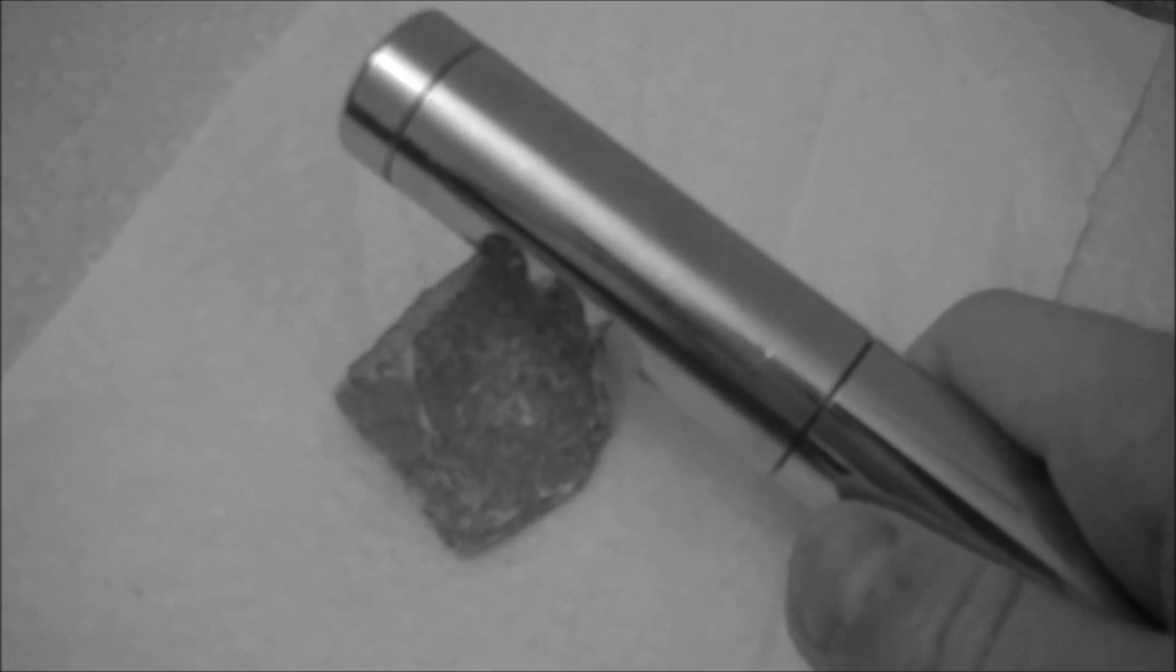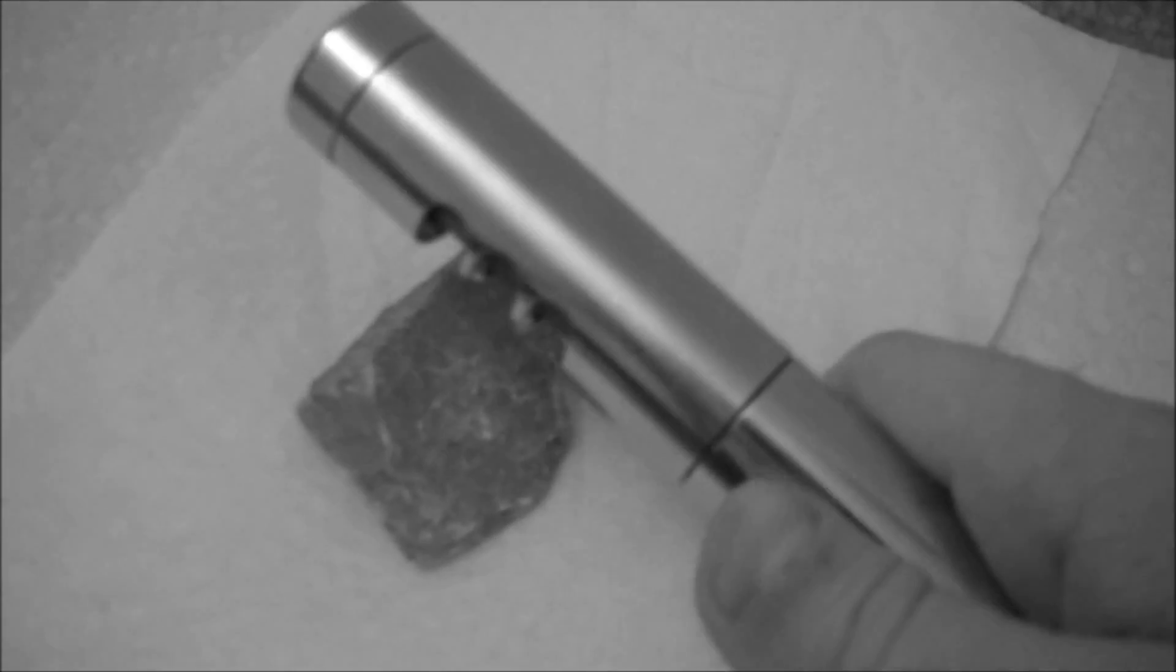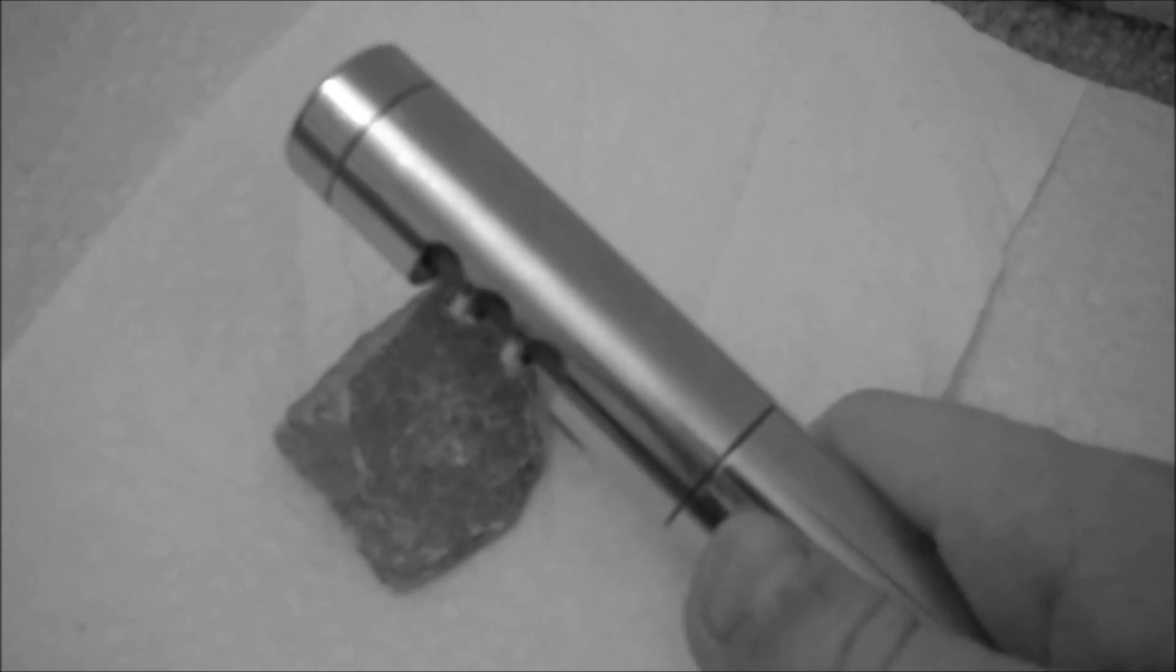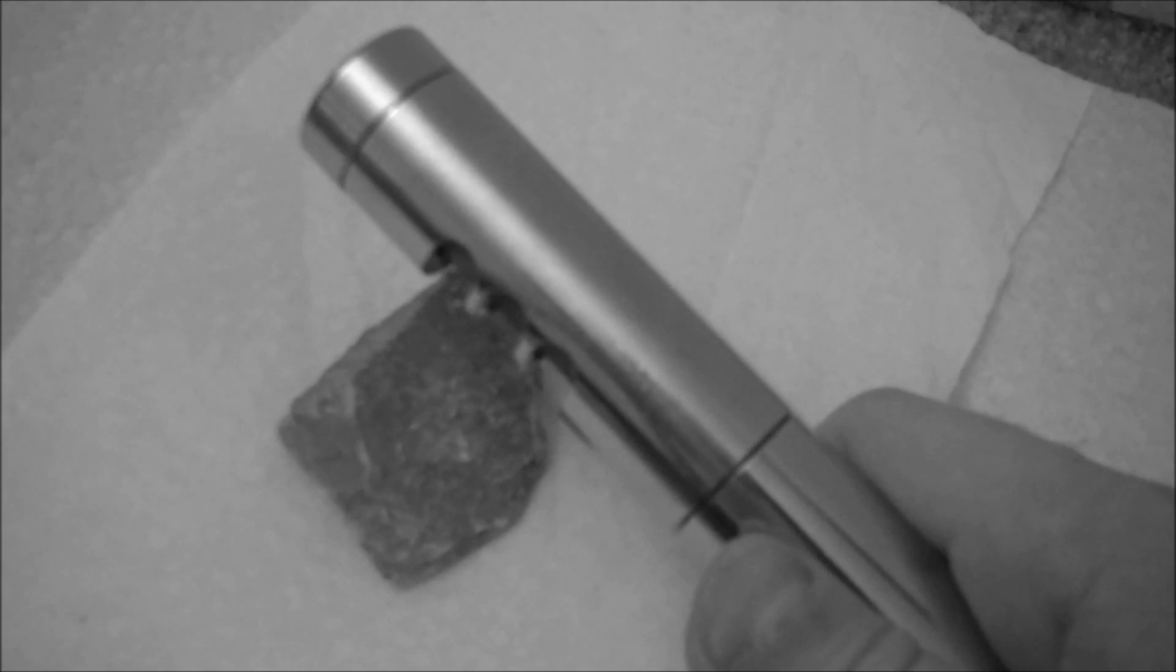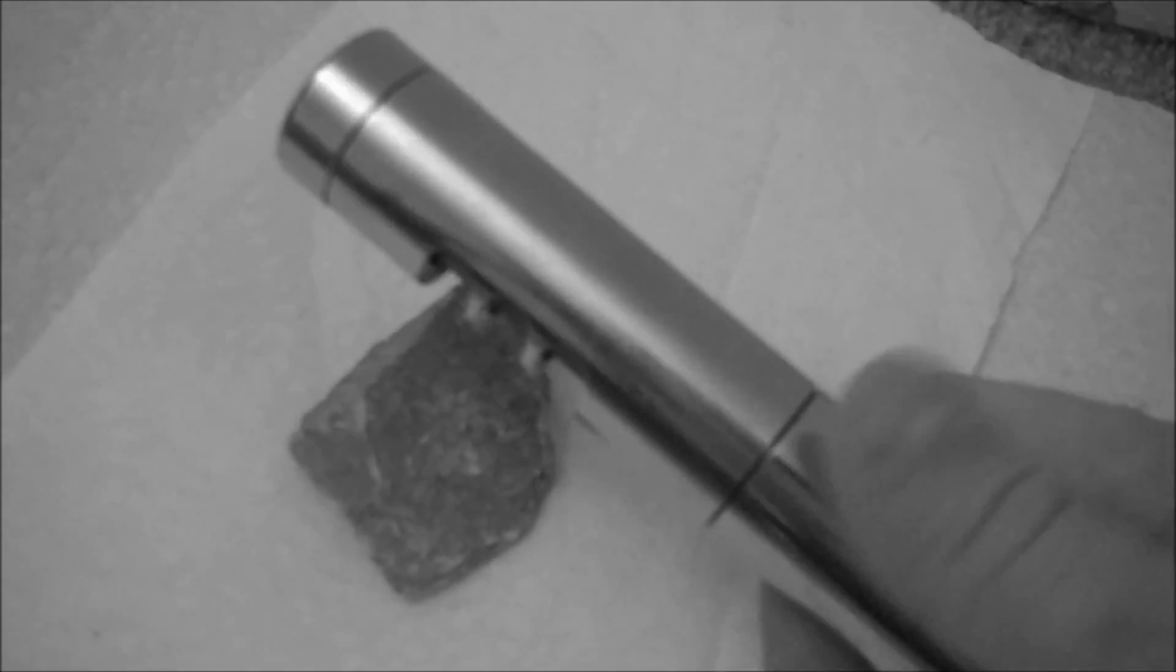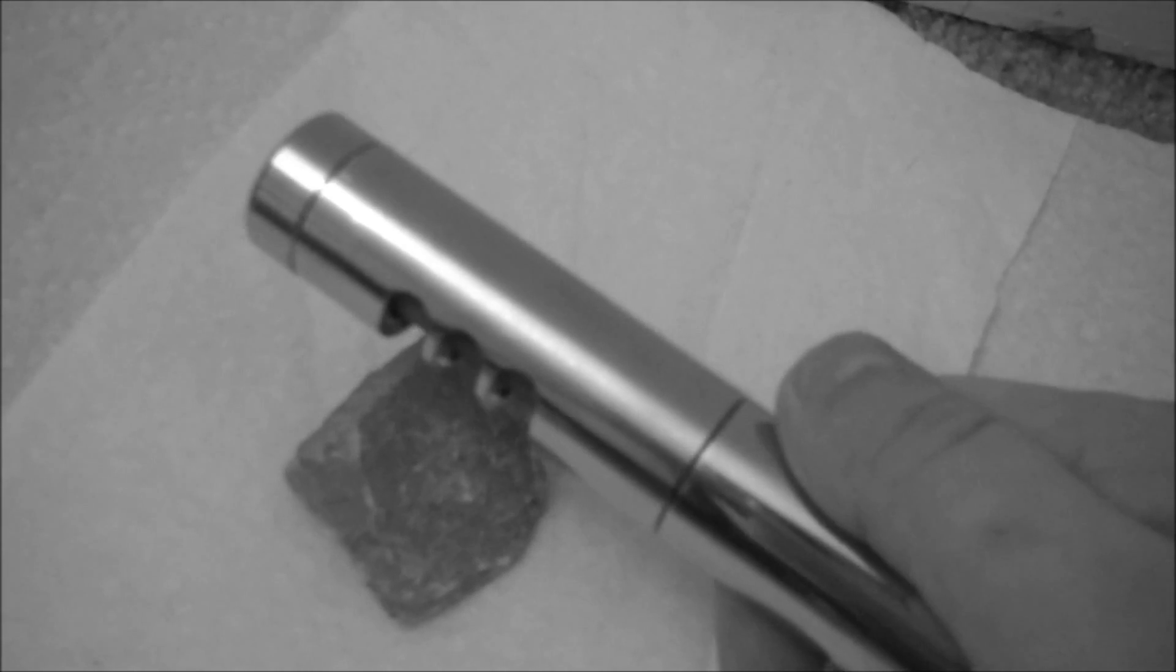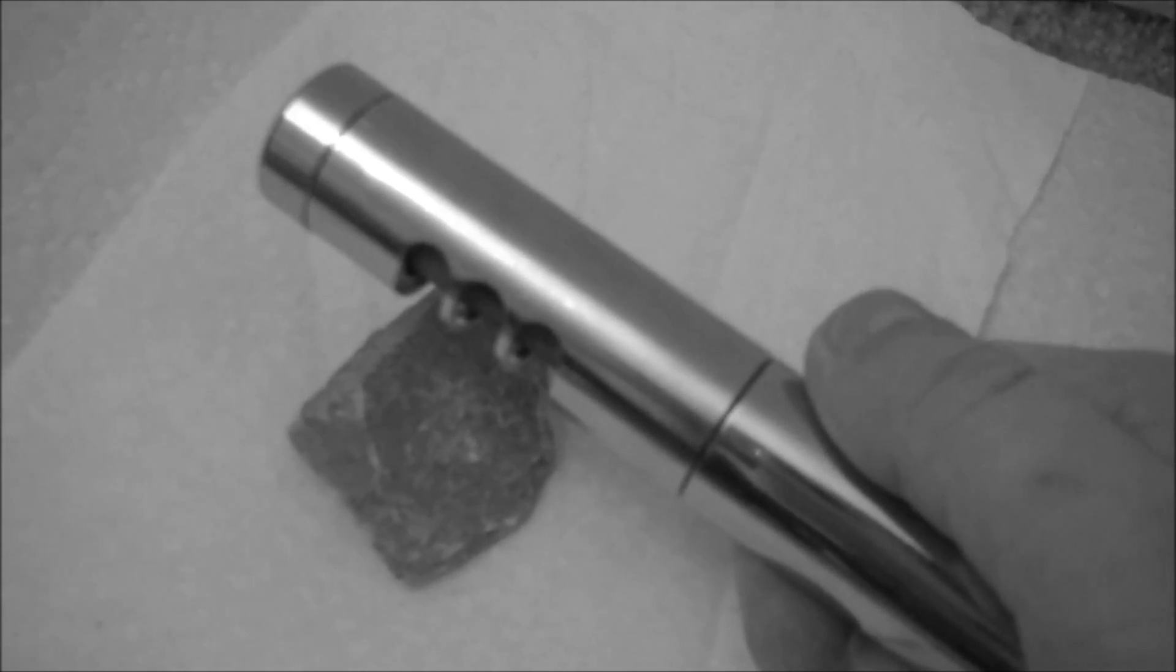In 1789, Martin Klaproth discovered a new element which he named uranium after the Greek god Uranus. This element displayed an interesting property. It emitted an invisible sort of energy. This energy was described as radiation.